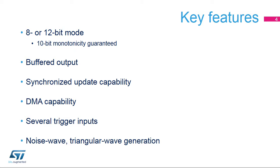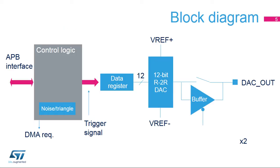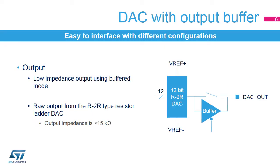It also integrates small logic to generate noise waves as well as triangle waves. Here you can see the simplified block diagram of the digital-to-analog converter. The STM32F7 integrates two of them. The DAC output can be buffered for low impedance loads. When unbuffered, the output is directly connected to the R2R resistor ladder network type of DAC.